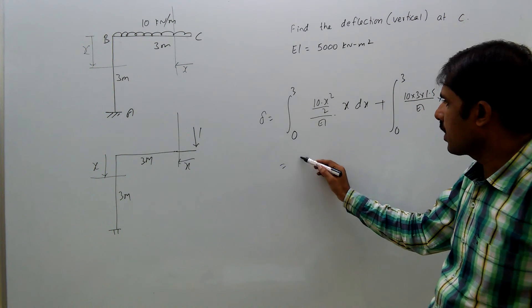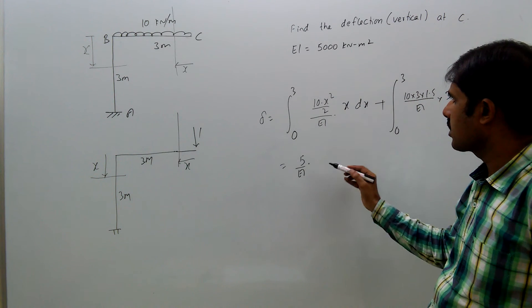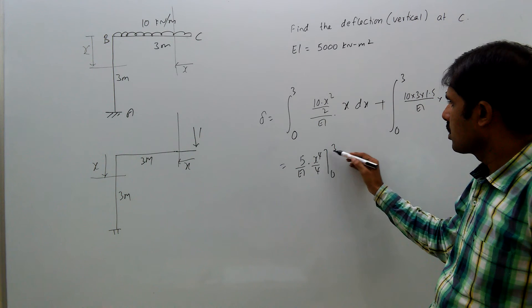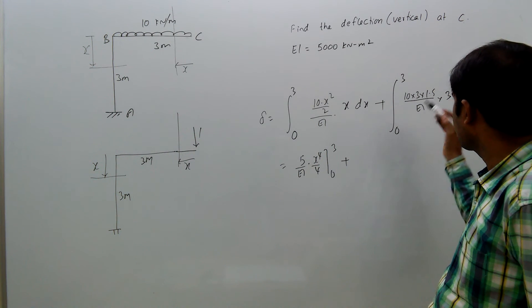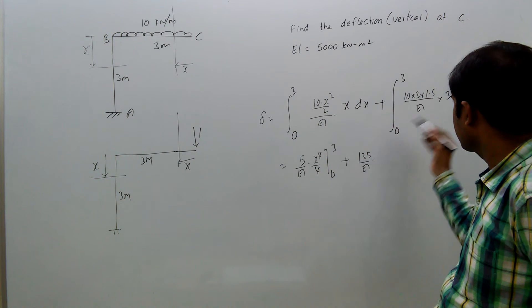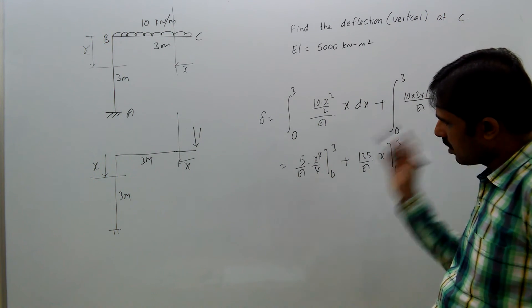That equals 10 by 2, that's 5. 5 by EI, x squared into x is x cubed, that means x to the 4 by 4, from 0 to 3, plus 45 into 3, that's 135 by EI, integration of x from 0 to 3.